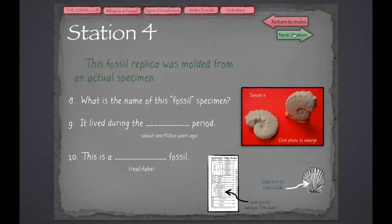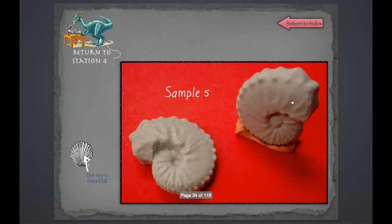At Station 4, we need to identify the fossil from its picture. We can enlarge for detail and study the image and see the distinctive ridges. So looking at clues,